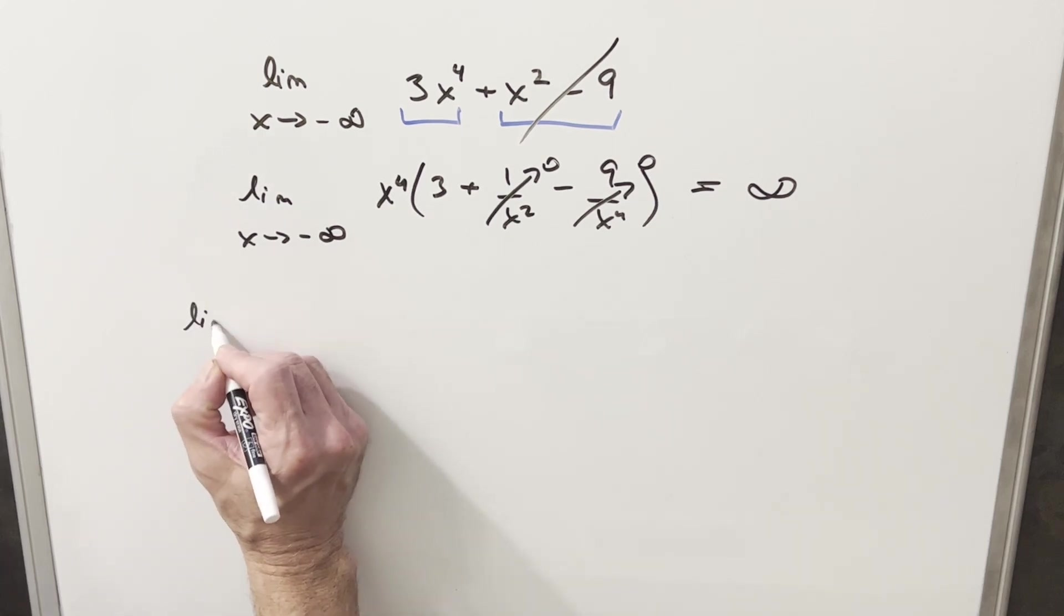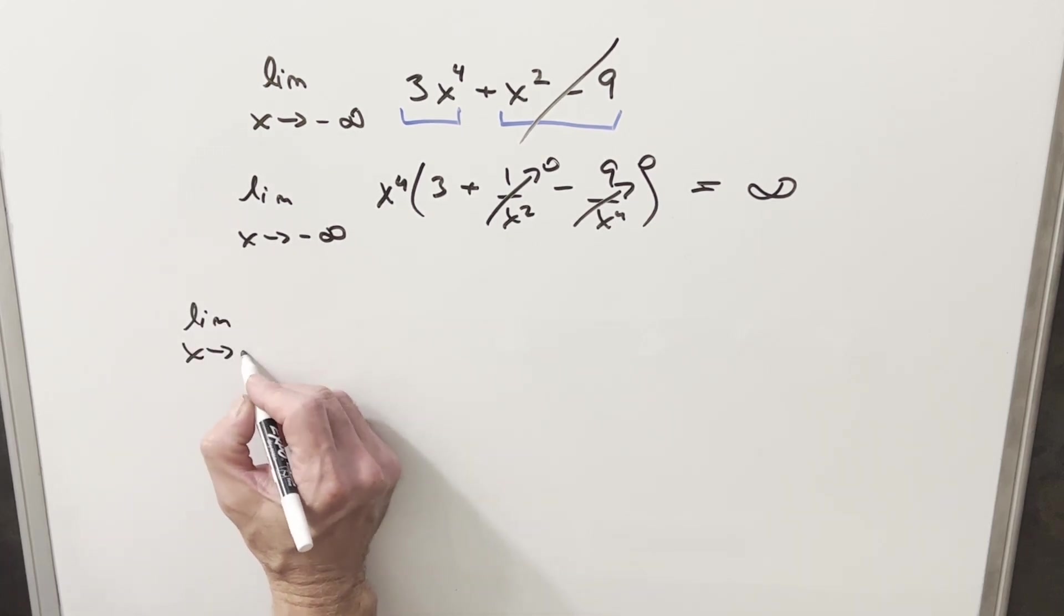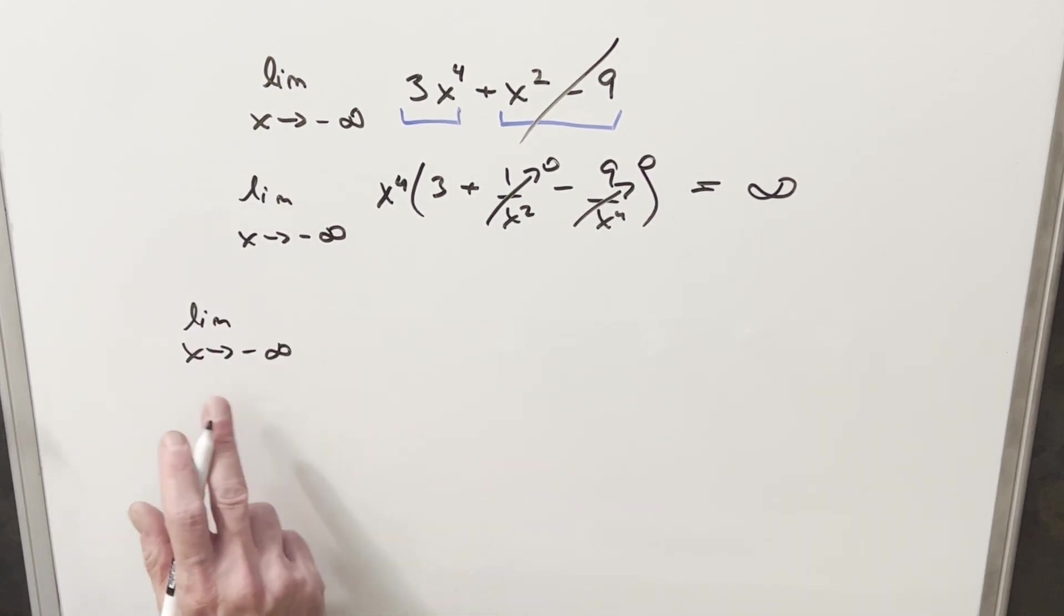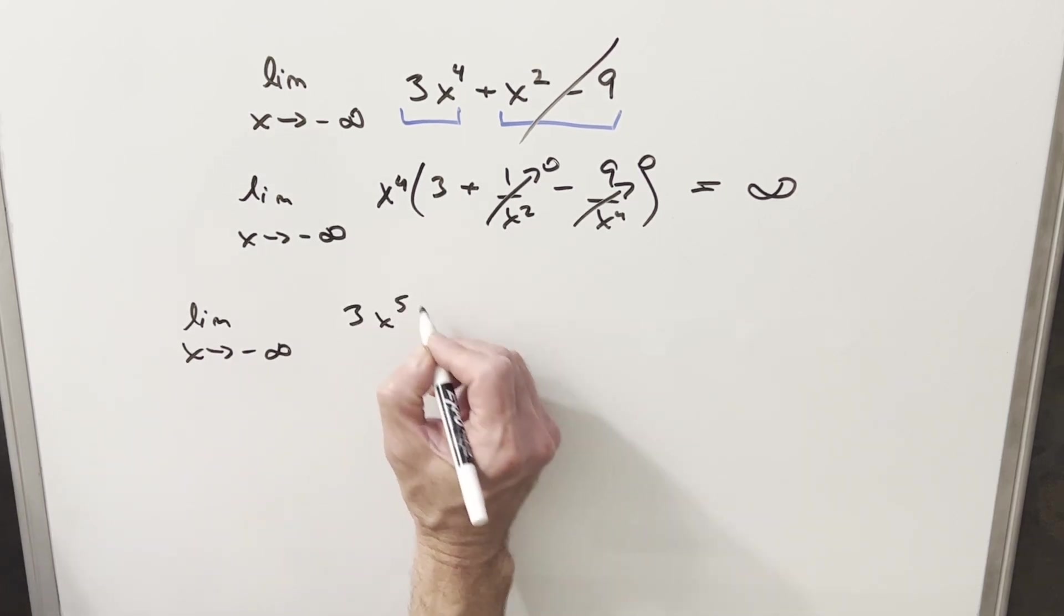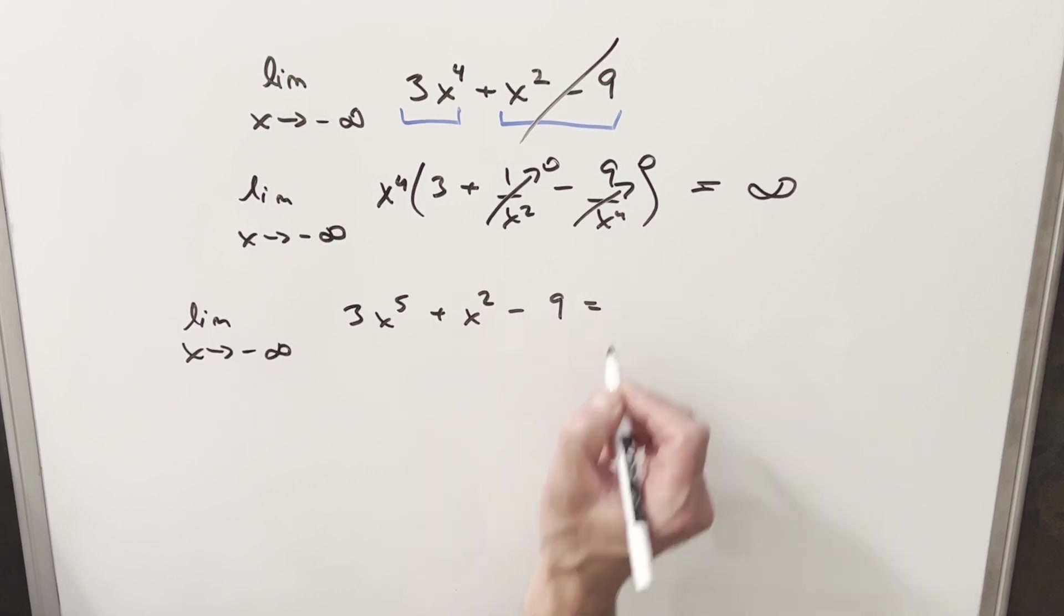But now let's look at a really similar situation with a similar polynomial, still looking at the limit as x approaches minus infinity. We're going to look at 3x to the 5th plus x squared minus 9. Now we're not going to bother to factor this time,